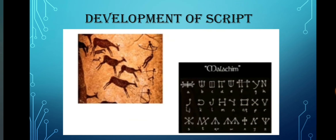Let's discuss about the development of script. Early human beings expressed their feelings and thoughts by drawings on the walls of the caves they lived in. They used pieces of burnt wood to draw pictures. These pictures were of wild animals and hunting scenes of man. Thus, early writings were in pictorial form. Gradually, the pictures were simplified and they began to use symbols. Symbols led to the development of script.